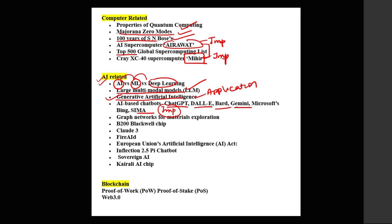For AI chatbots, no need to prepare in depth — just know what they are and which company launched them. For example, Gemini is by Google. Also note Claude 3 AI, Fire AI by the World Economic Forum. Then the European Union Artificial Intelligence Act is important. Also prepare: what is sovereign AI, what is Inflection 2.5 and the Pi chatbot — Inflection 2.5 is a large multimodal language model. Also in news: the Kerali AI chip.